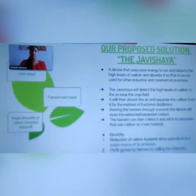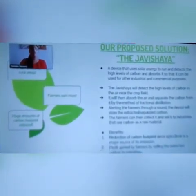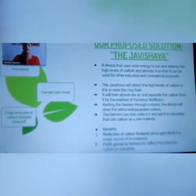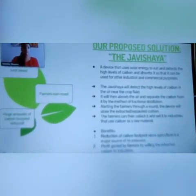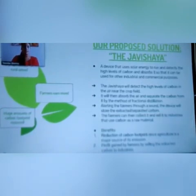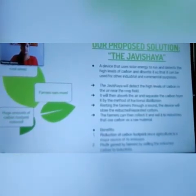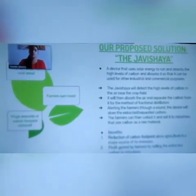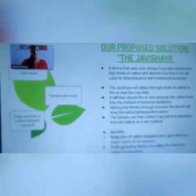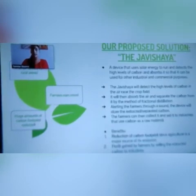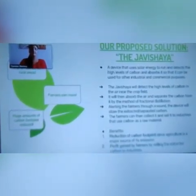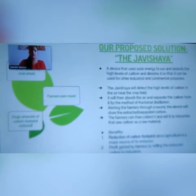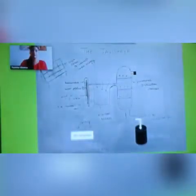Our proposed solution, the Javishya, is a device that uses solar energy to run, detects high levels of carbon, and absorbs it so that it can be used for other industrial and commercial purposes. The benefits include reduction of carbon footprint — since agriculture is a major source of emissions — and profit gained by farmers by selling extracted carbon to industries. In all, it is a smart device for rural areas through which huge amounts of carbon are reduced and farmers earn more.